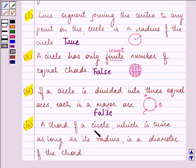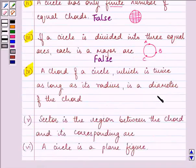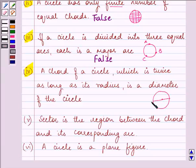The fourth statement says: a chord of a circle which is twice as long as the radius is the diameter of the circle. We know that this is the radius. Now, if you add the same radius to the other side also, this will become the diameter. So that is why this is a true statement.